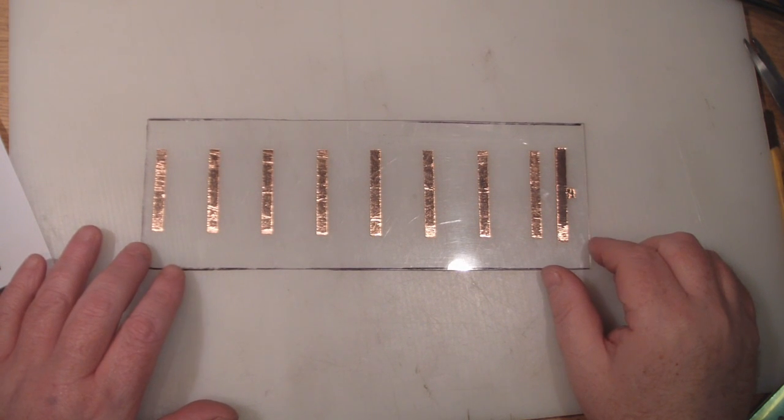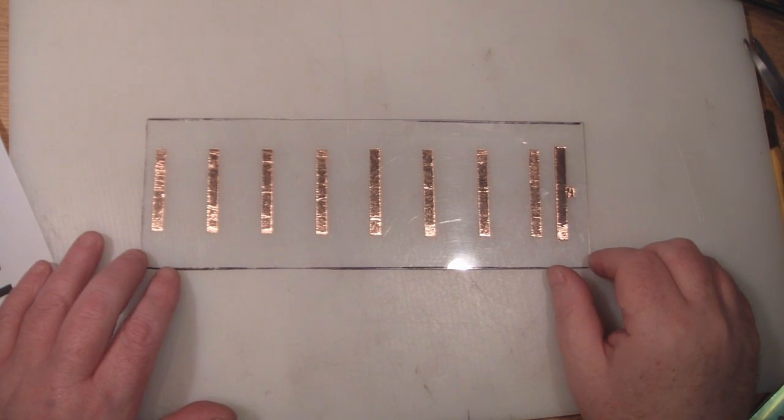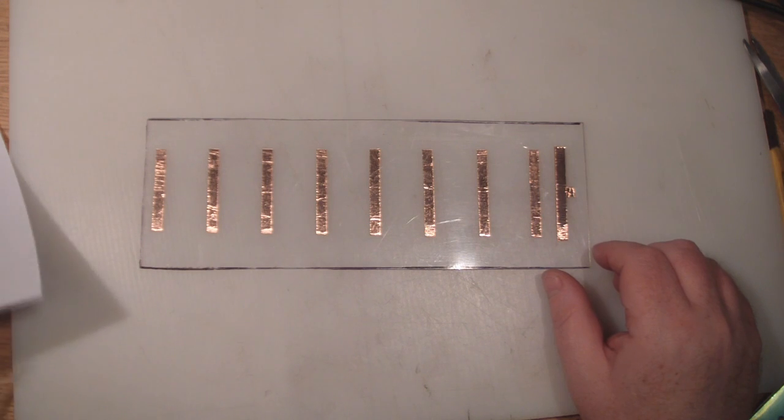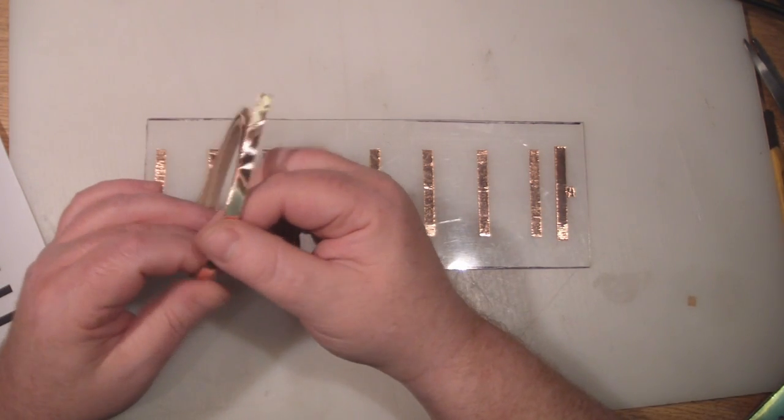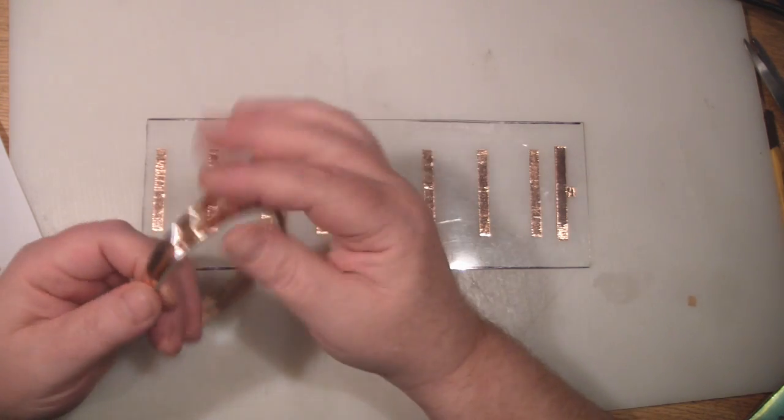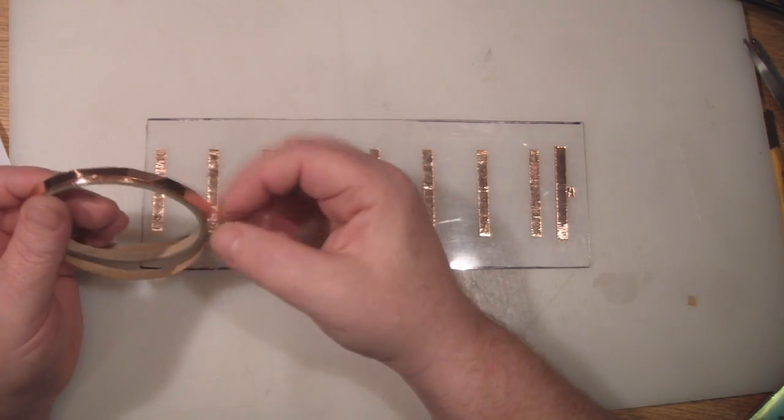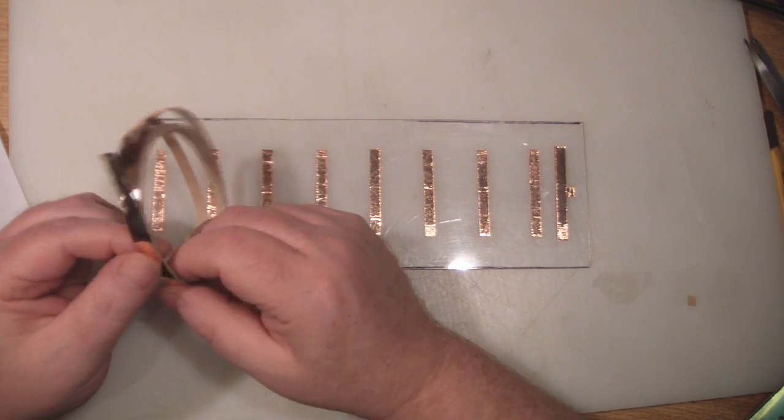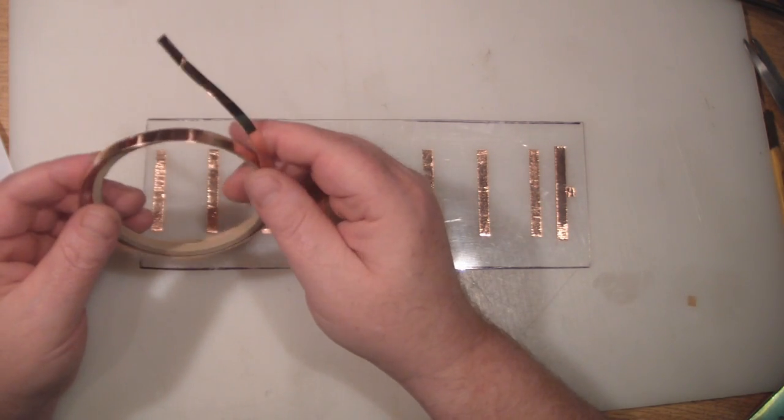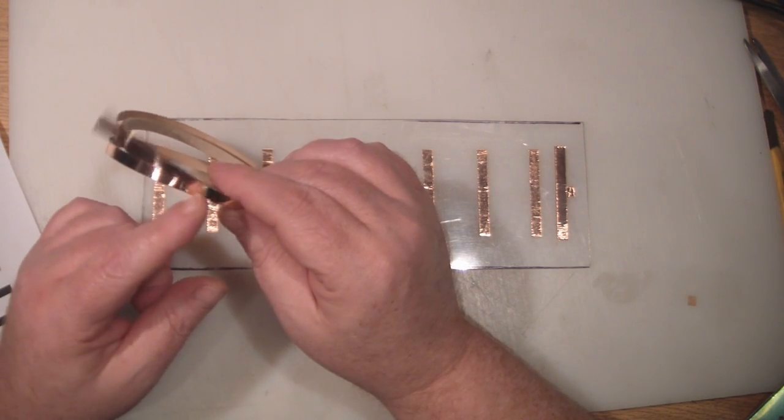So that's the actual Yagi part of this build finished. This tape that I've used here, I'll put a link in the description below. I got it off eBay for less than £2 with free shipping. I believe it's normally used for guitar pickups and such, but it really is good stuff because you can actually solder to it.